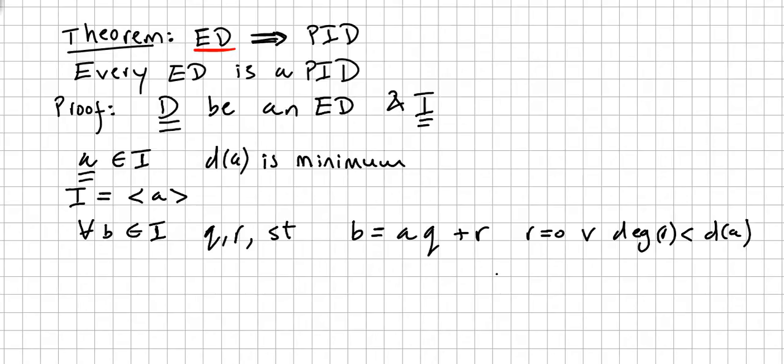But here, let us solve for r. So r will be equal to b minus aq, right? And these are all in the ideal. So just look at this. If you see the degree of r, either r is zero or the degree of r is less than the degree of a.